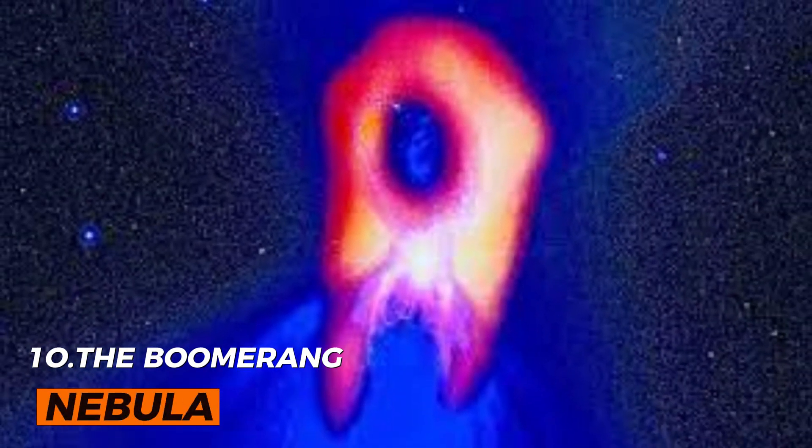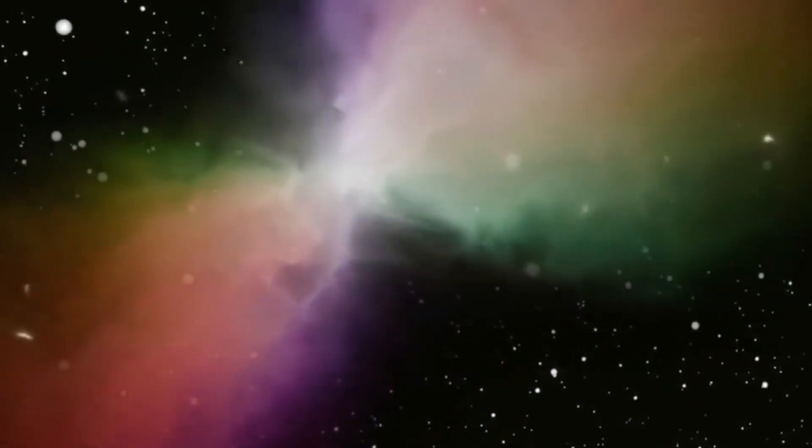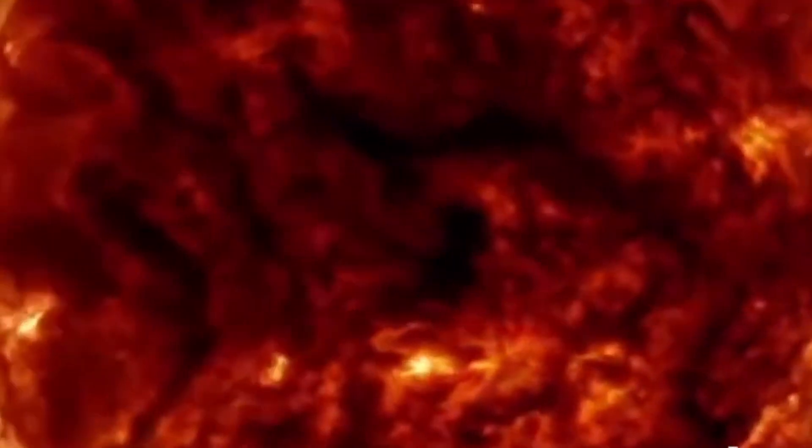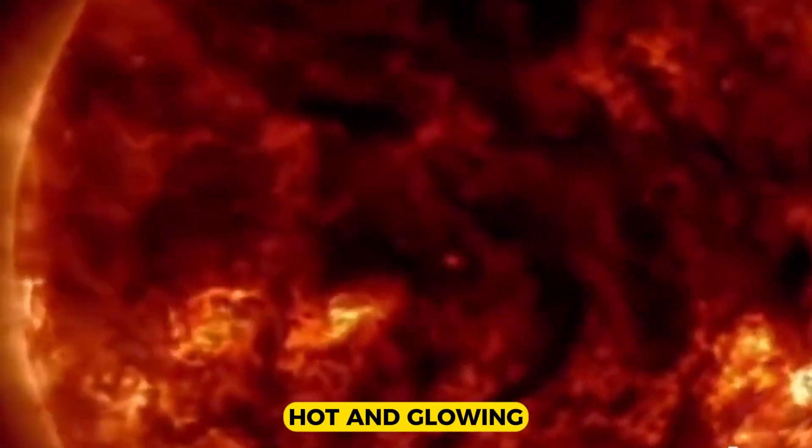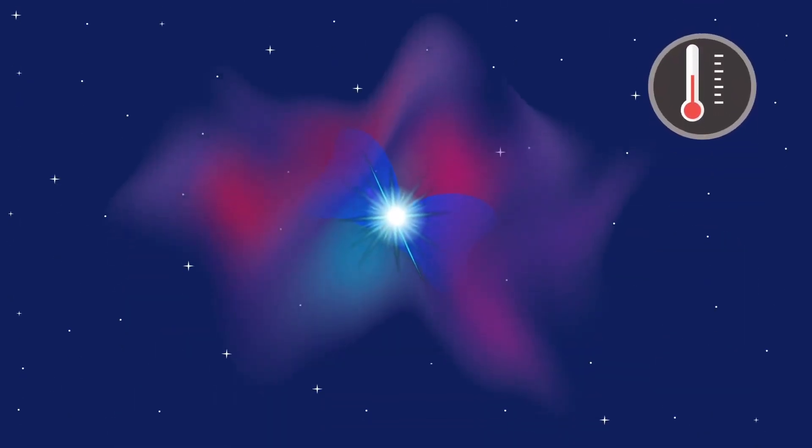Number 10: The Boomerang Nebula. The Boomerang Nebula is a fascinating object in outer space that defies the common expectations of a nebula. Unlike most nebulae, which are hot and glowing clouds of gas and dust, the Boomerang Nebula is extremely cold and dark. It has a temperature of only 1 degree above absolute zero, making it the coldest known place in the universe.